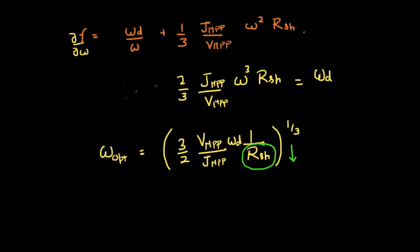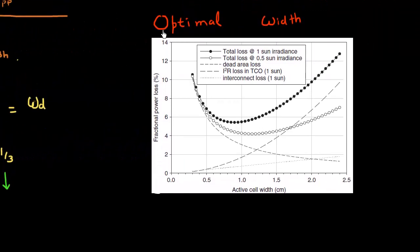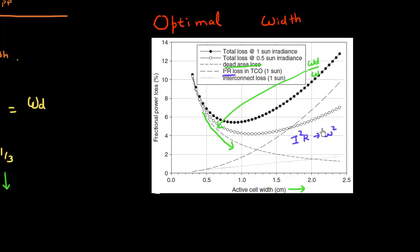Let me show you this in another chart. This plots the two terms which contribute to the power loss. The first is the dead area contribution, which essentially reduces as I increase my cell width — it's inversely dependent on width. Then I have the second term, the I²R loss, which is proportional to the square of the cell width, so it increases as I increase cell width. Of course I get an optimum where the total power loss is minimized.